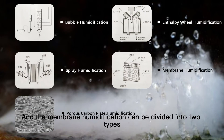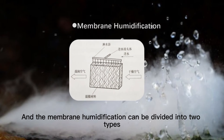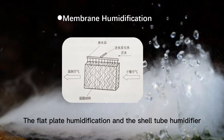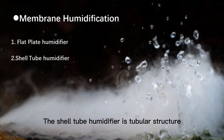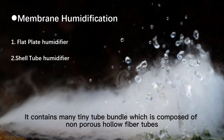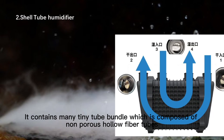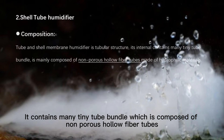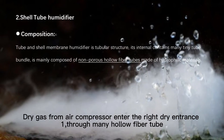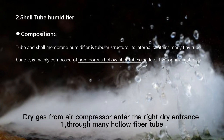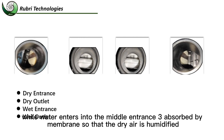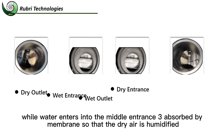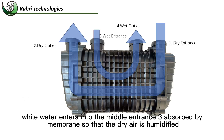There are various external humidification technologies, and membrane humidification can be divided into two types: flat plate humidification and the shell tube humidifier. The shell tube humidifier has a tubular structure containing many tiny tube bundles composed of non-porous hollow fiber tubes. Dry gas from the air compressor enters the right-side entrance, passes through many hollow fiber tubes, while water enters the middle entrance and is absorbed by the membrane, so that the dry air is humidified.